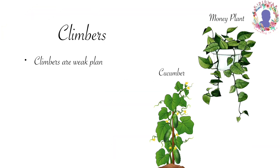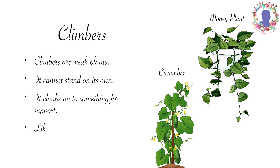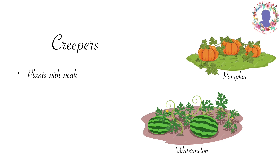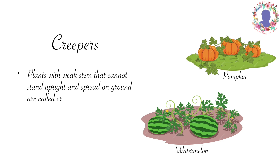Climbers are weak plants. They cannot stand on their own. They climb onto something for support. Grapevine, peas, cucumbers, money plant are some examples of climbers. Plants with weak stem that cannot stand upright and spread on the ground are called creepers. Pumpkin and watermelon plants are examples of creepers.